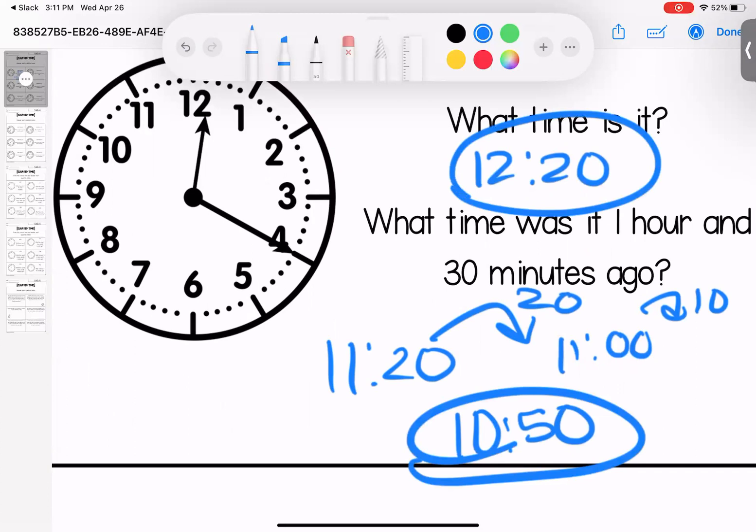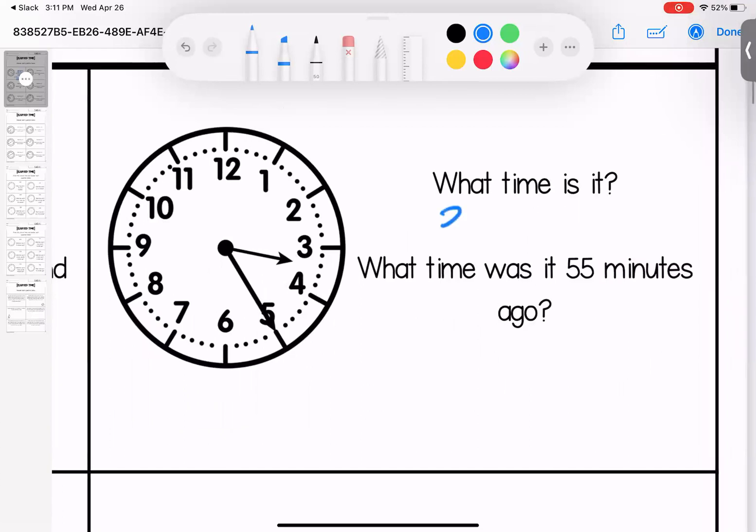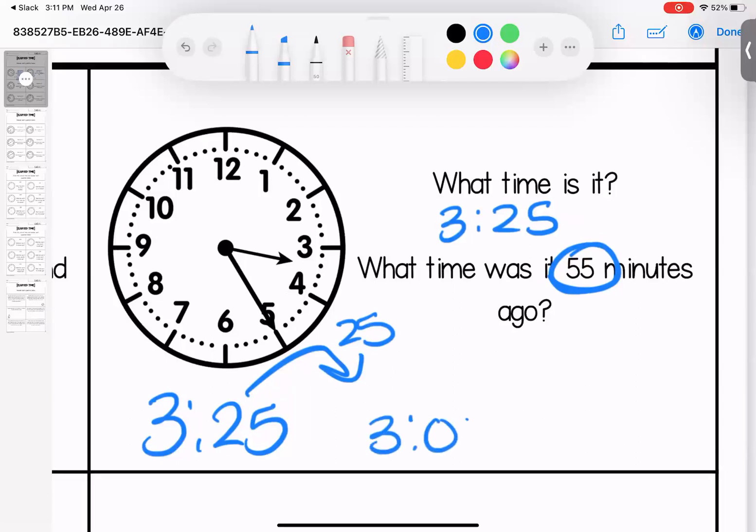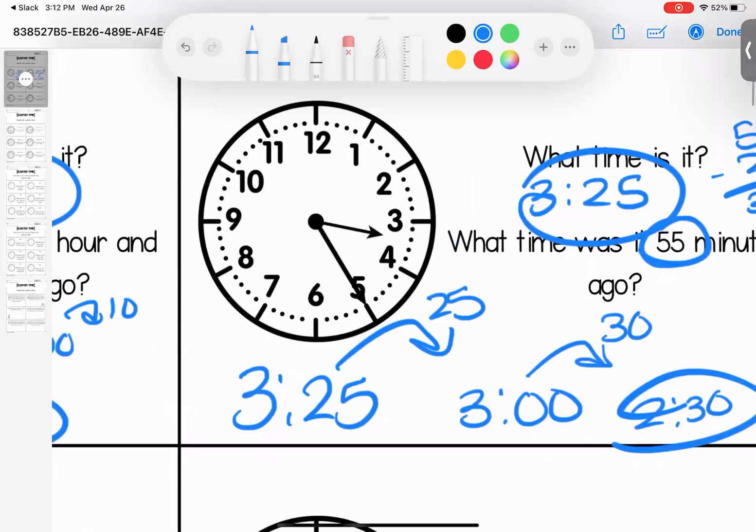What time is it? It is 3:25. What time was it 55 minutes ago? Well if I take off 25 minutes it's 3 o'clock, and that leaves me with 30 more minutes. If I take off another 30 minutes it's 2:30.